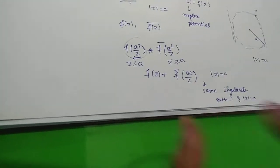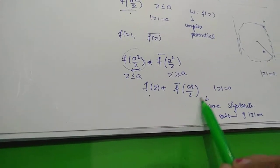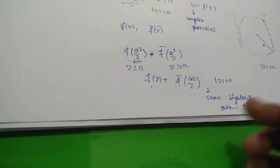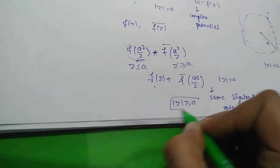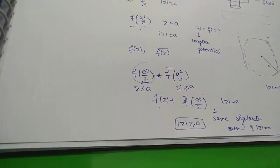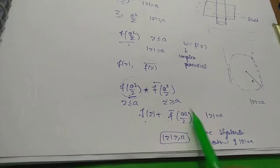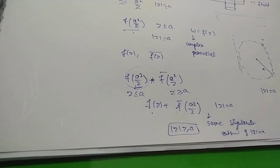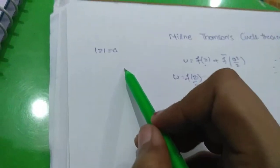Both have the same singularities outside of mod z = a. So when we have a new complex potential fz + f̄(a²/z), there are no new singularities in the region outside. The first part is proved: adding the new function to the complex potential introduces no new singularities outside the circle. Now we must prove that the circular cylinder mod z = a is a rigid boundary.